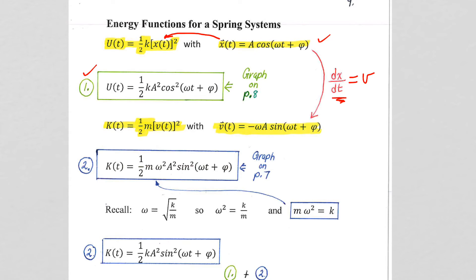Derivative cosine is opposite sine theta d theta dt, so we get the extra omega here. And we're going to substitute that in here to get our kinetic energy equation.